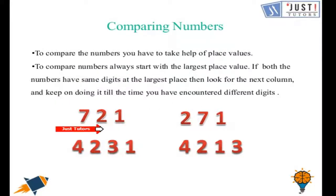So now let us compare 721 and 271. The largest place value column here is the hundreds. There is a 7 in the hundreds and there is 2 in the hundreds. Definitely 7 is the largest number. That's why 721 marks the larger number.